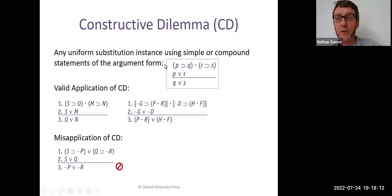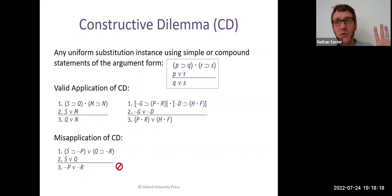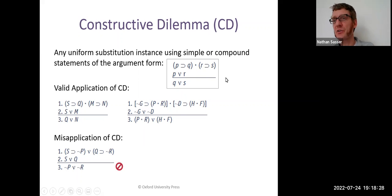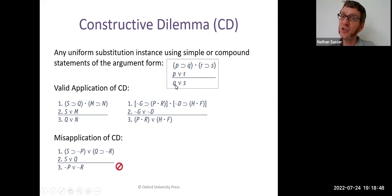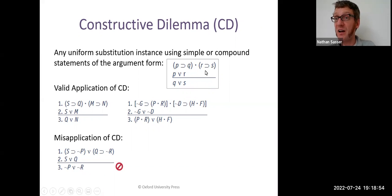The first premise is a conjunction, but the two conjuncts are both conditional statements: 'if P then Q' and 'if R then S'. The other premise is a disjunction, but it's a special disjunction — the two disjuncts are the antecedents of the two conditional statements: P or R. From those two premises you can conclude another disjunction: Q or S. That is, you can conclude that either this consequent or the other consequent must be true.